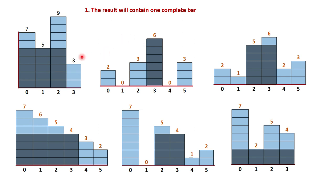Now what we can do is calculate the area for a particular bar and then compare at the end. For example, for bar 7 the maximum area is 7 itself. For bar 5 it is 15. For bar 9 it is 9. For bar 3 it is 4 into 3 equals 12. So our approach is: for every bar, find what is the maximum area it can cover.